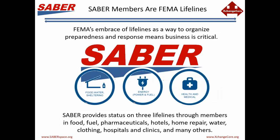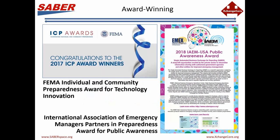SABR also enables business-to-business collaboration to try to get everybody back in business faster. Our members are drawn from three different lifelines: food, water, sheltering, energy, and health and medical. Those lifelines are a new way that FEMA is looking at disaster response, and SABR supports that. SABR has won awards — the 2017 FEMA Individual and Community Preparedness Award for Technology Innovation, and last year the International Association of Emergency Managers Award. So we have some credibility here and we want to build on that through your participation.